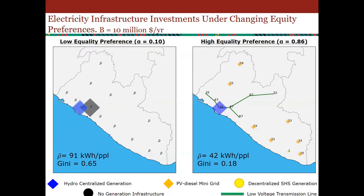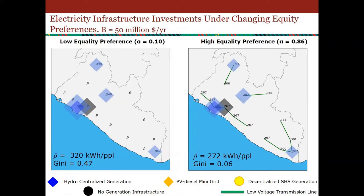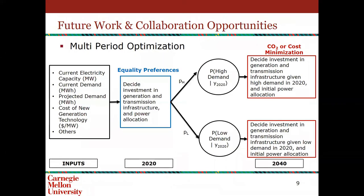At a budget of $10 million per year annually for 30 years, there are two maps. The low equality preference on the left is when they don't care at all, and the high equality preference on the right is alpha 0.86, assuming the logarithmic functional form. At the low equality preference, it essentially turns into a cost minimization problem of maximizing the number of people connected at the lowest cost — you build big power plants in the large city, which is what the country is already doing. When you add in equality preference, the big trade-off is transmission line infrastructure investment. If we increase the budget by a factor of five, without caring about equality you won't reach your universal access target, but when you do care, you invest in more transmission.